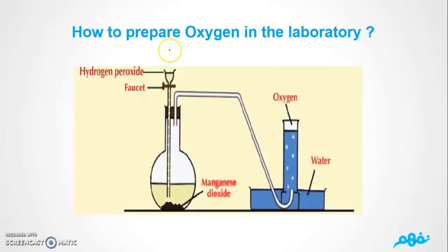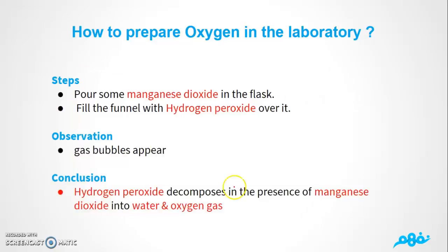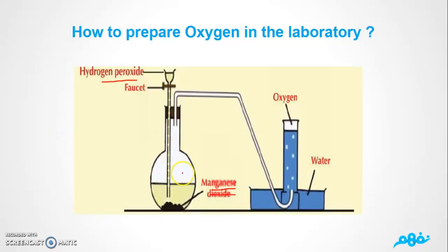Now we're going to talk about how to prepare oxygen in the lab. We have hydrogen peroxide, and we're going to add magnesium dioxide. The steps are: we're going to pour some magnesium dioxide in the flask, and then we're going to put hydrogen peroxide over it. First, add magnesium dioxide in the flask, then put hydrogen peroxide on top of it.